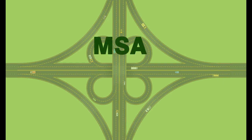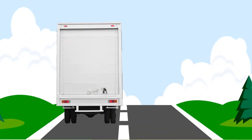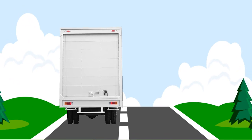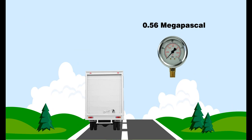MSA, million standard axles, is used for designing of the pavement. In the Indian context, the standard axle is defined as an axle having four wheels, two on either side, having a tire pressure of approximately 0.56 MPa and carrying a total load of 80 kN.